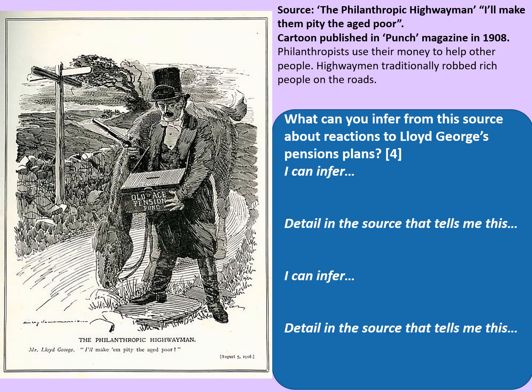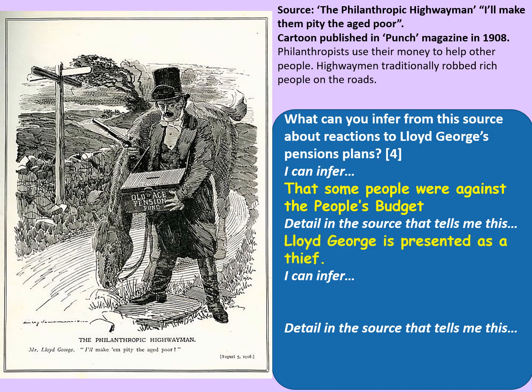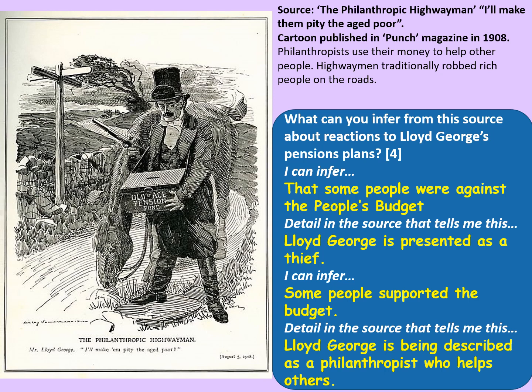So what can you infer from this source about reactions to David Lloyd George's pension plans? I can infer that some people were against the People's Budget — the detail that tells me this is that Lloyd George is being presented as a thief. I can also infer that some people supported the budget, as Lloyd George is being described as a philanthropist who helps others. Ultimately the message is that David Lloyd George will help old age pensioners by collecting taxes, whether people like it or not. If you look at the back of the road underneath the tree, we can see the rich arriving in their cars — David Lloyd George is about to pull down his mask, point his gun at them and say 'your money or your life.'